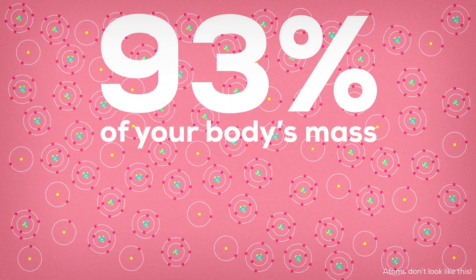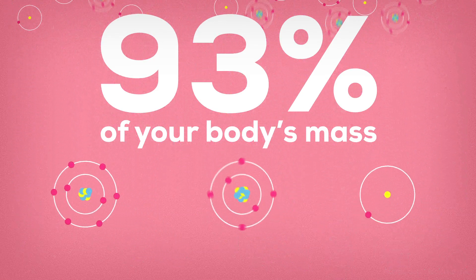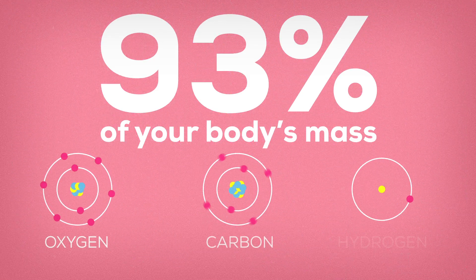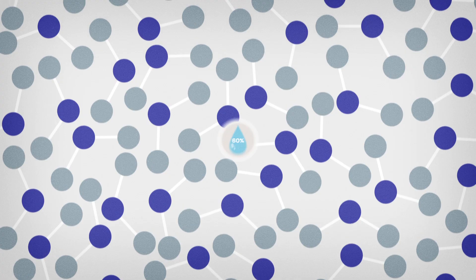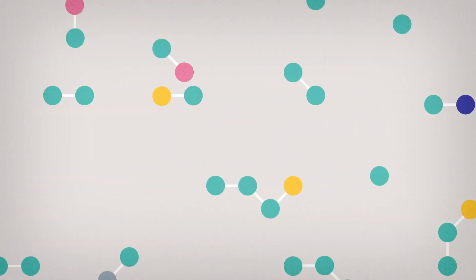Roughly 93% of the mass of the human body is made up of just three elements. Oxygen, carbon and hydrogen. Oxygen and hydrogen are predominantly found in water, which makes up about 60% of the body by weight.